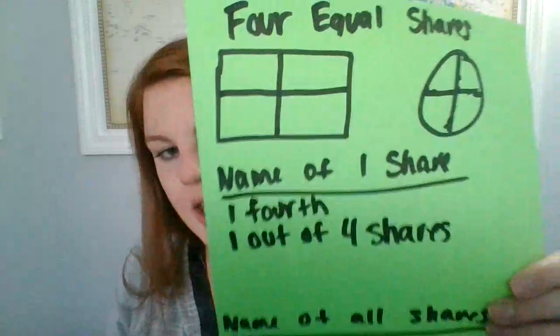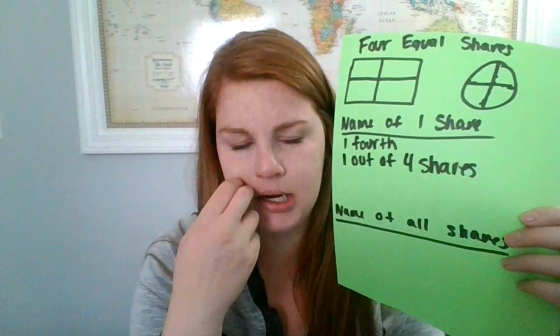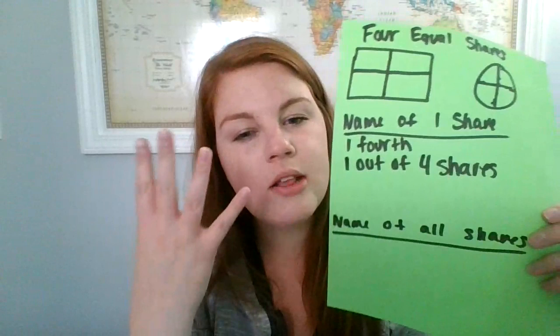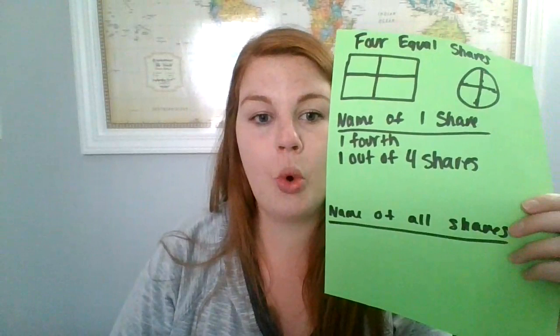There's actually another special name for these separate fourths and that's called a quarter. We know quarter from our money. If you think about a quarter in money — how many quarters do you need to get to a whole dollar? 25, 50, 75, 100 — so it takes four quarters to get to a whole dollar. And for this, it would take four quarters to make a whole shape. So it goes along with money by calling these quarters. If something is split into four and you only want one, you would say that's a quarter.